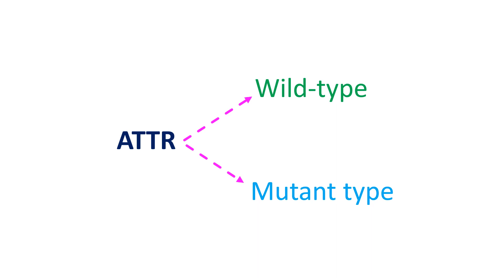Transthyretin amyloidosis is due to excessive monomeric form of transthyretin which is prone for misfolding and deposition in tissues. Transthyretin is prealbumin produced by the liver and acts as the transporter for thyroxine and retinol. The dominant form in blood is a homo tetramer, though small amounts of monomer may also be found in circulation.